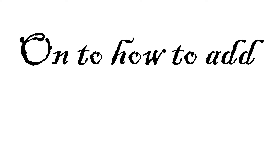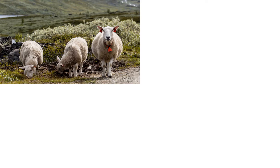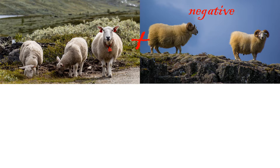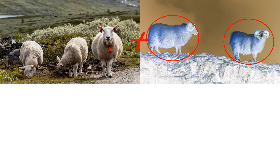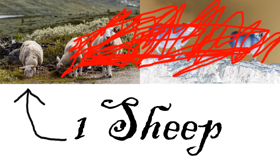On to how to add negative numbers. Let's say you have three sheep and negative two sheep, or two anti-sheep. Two of the sheep annihilate themselves with two of the anti-sheep in a bloody catastrophe, and you are left with one sheep.